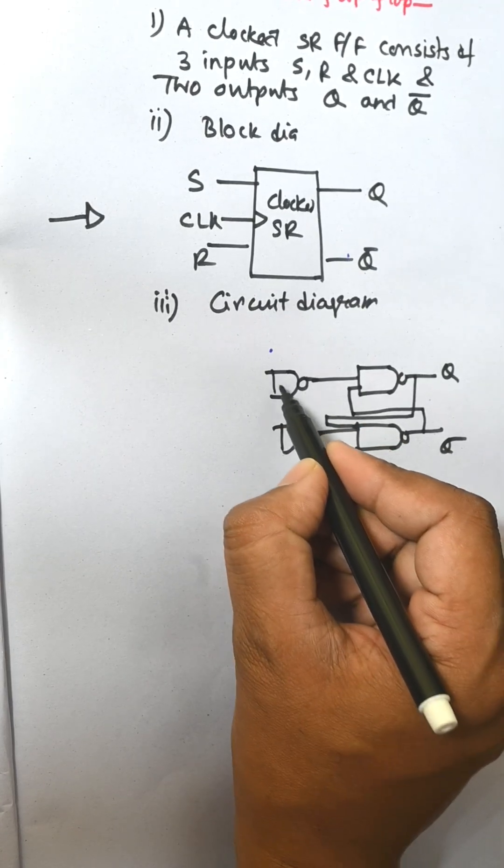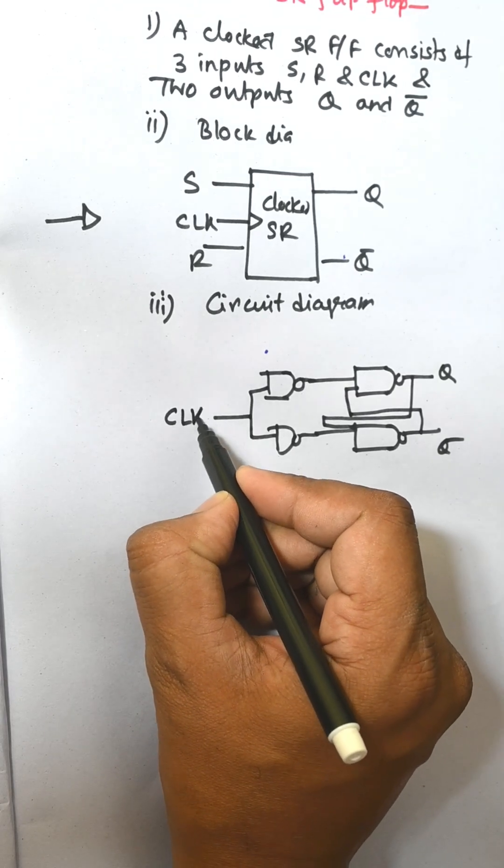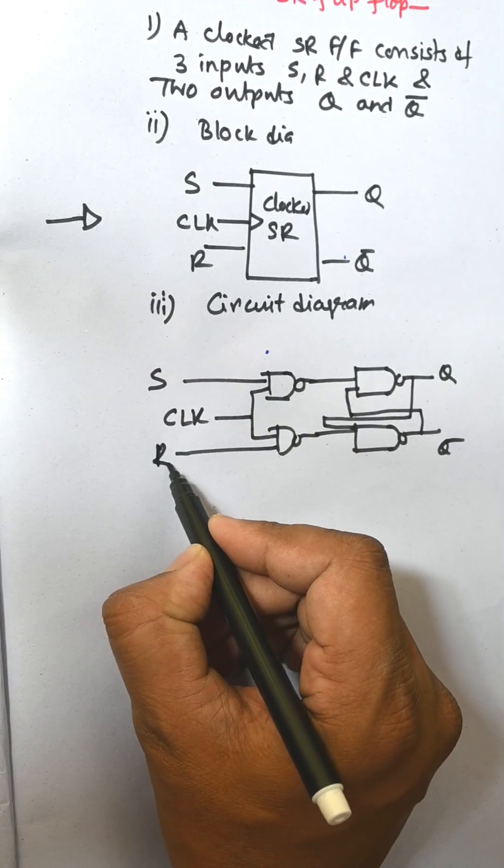This is CLK (clock), and this is S, and this is R. So this is the circuit diagram for clocked SR flip-flop.